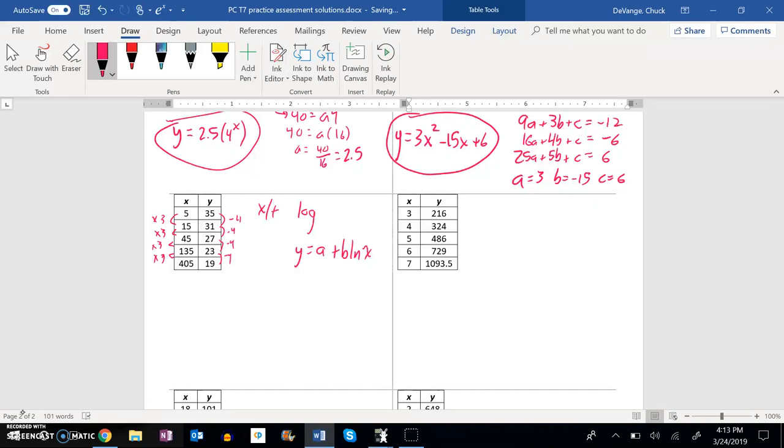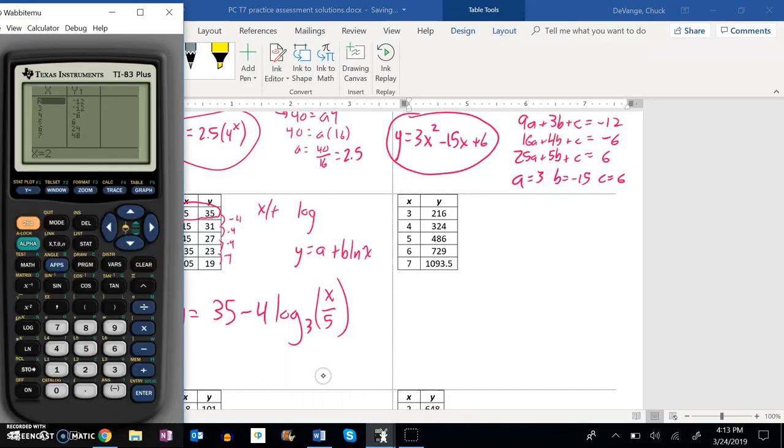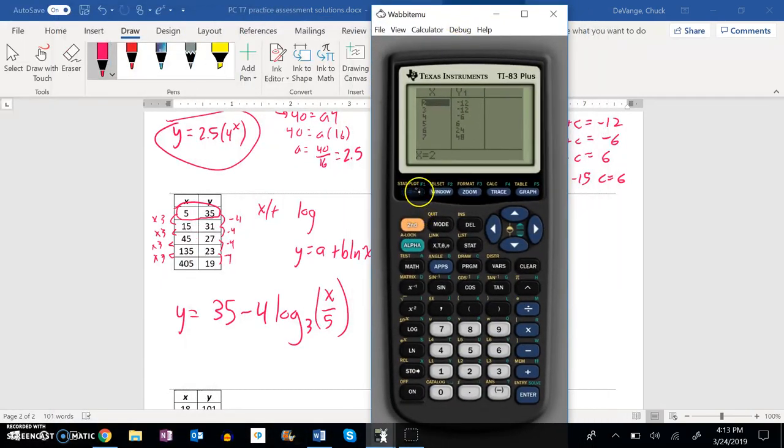So I'm noticing on the y values, I'm going to pick the 0.535. I could do this with any point. Y is 35, and it's changing by negative four. It's multiplying by three, so my base is three. And the x point that's associated with the y point is five. So x divided by five. And I can put that in my calculator and check and make sure that it works.